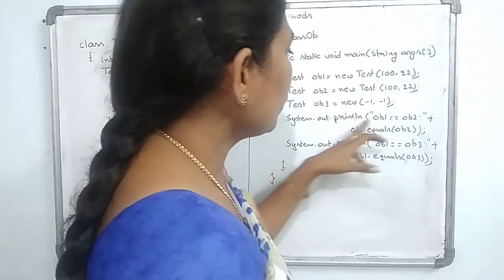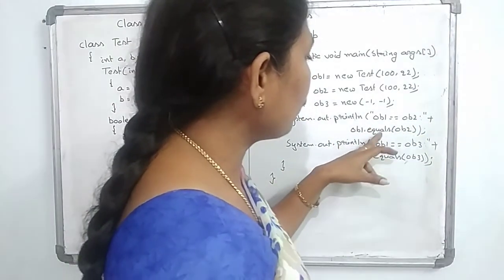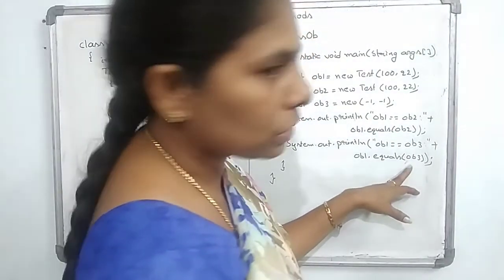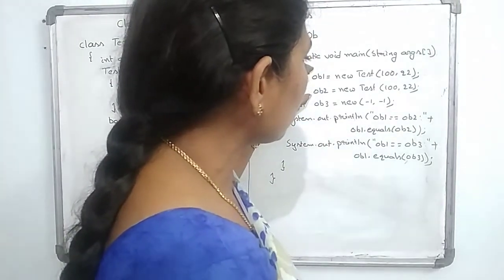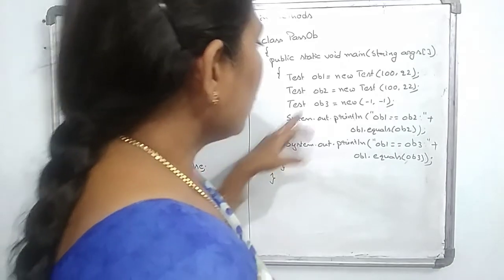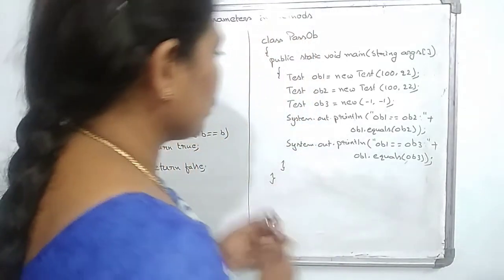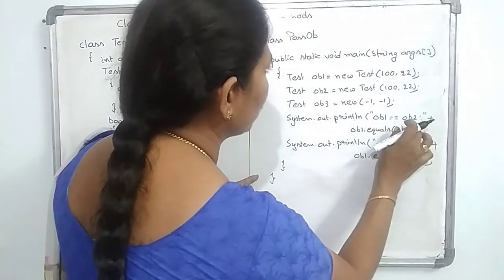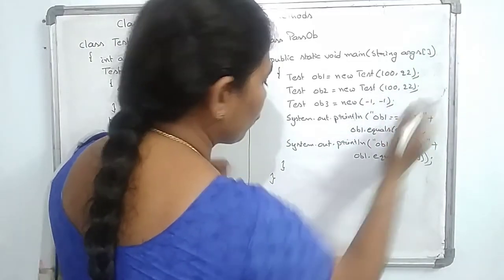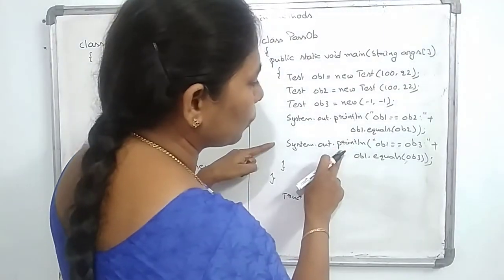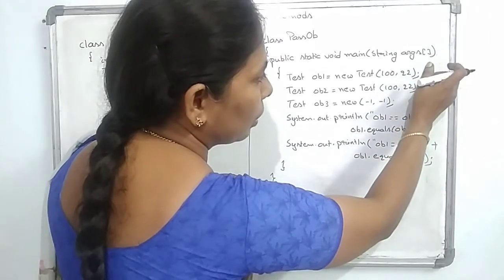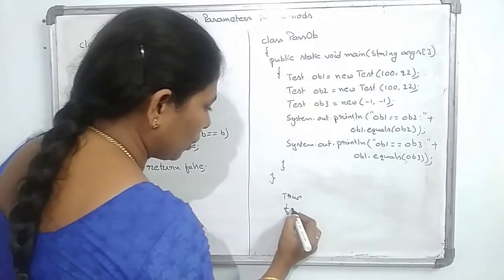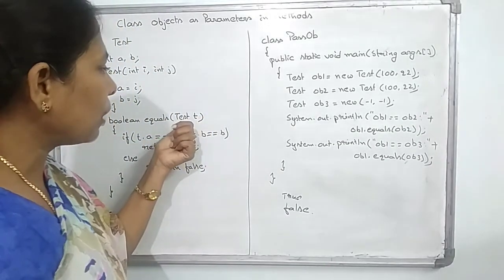After that, I am printing the comparison values. If OB1 equals OB2, it will give the output of OB1.equals(OB2). And for OB1 equals OB3, it will call equals(OB3). I am comparing OB1 and OB2 — since both have the value 122, they are equal, so it returns true. For OB1 and OB3, OB1 has 122 and OB3 has -1, -1, so they are not equal and it returns false. That is how I am passing objects as parameters to a method.